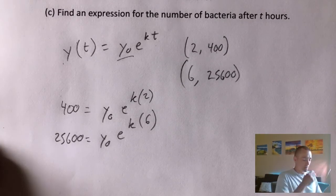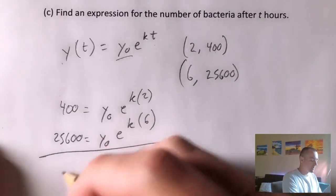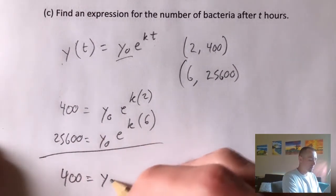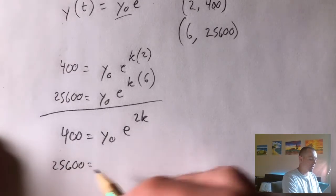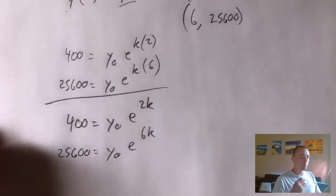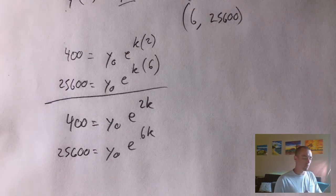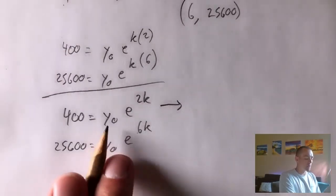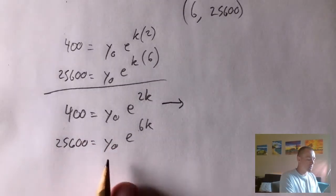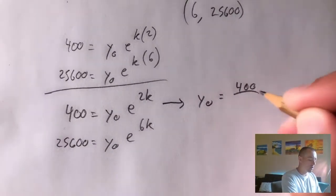Let's simplify. Multiplying out the exponents gives us: 400 equals Y sub zero times E to the 2K, and 25,600 equals Y sub zero times E to the 6K. With a system of equations there are usually two different ways to solve — in this case the easiest way is substitution. So I'm going to take the first equation and solve for Y sub zero by dividing both sides by E to the 2K, giving us Y sub zero equals 400 over E to the 2K.